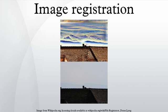Spatial methods operate in the image domain, matching intensity patterns or features in images. Some of the feature-matching algorithms are outgrowths of traditional techniques for performing manual image registration, in which an operator chooses corresponding control points in images. When the number of control points exceeds the minimum required to define the appropriate transformation model, iterative algorithms like RANSAC can be used to robustly estimate the parameters of a particular transformation type for registration of the images.